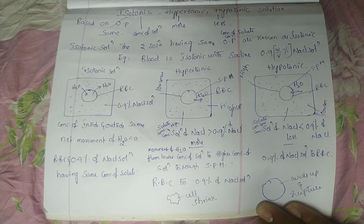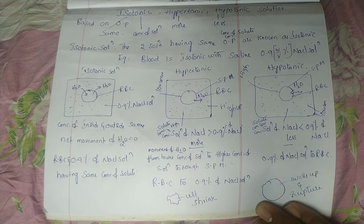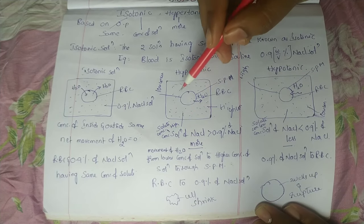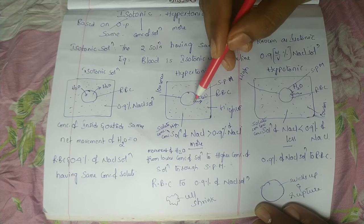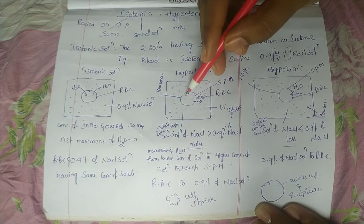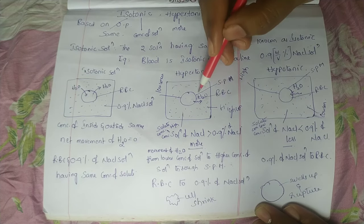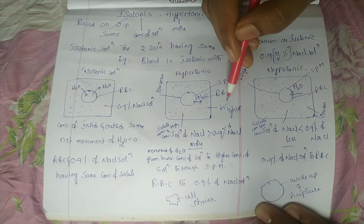Osmotic pressure ni base chesuko, solutions ni 3 ga classify cheesthamu: isotonic, hypertonic, hypotonic solutions ga. First of all, osmosis ante endi telisko nnamo - osmosis ante emi ledu, moment of water molecules from lower concentration of solution to higher concentration of solution through the semi-permeable membrane. Ante low concentration of solution ninchi high concentration of solution lo ki water ane adhi move avutundi, semi-permeable membrane dvara movement jarukutundi.